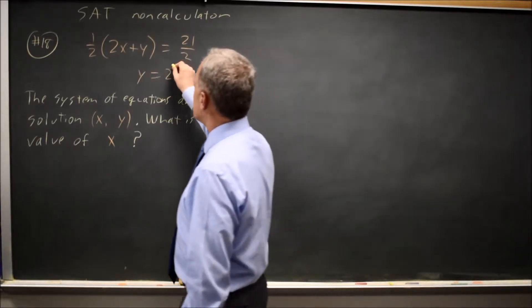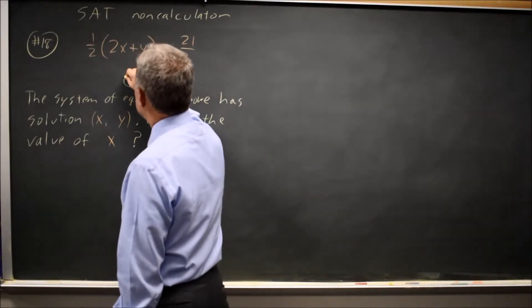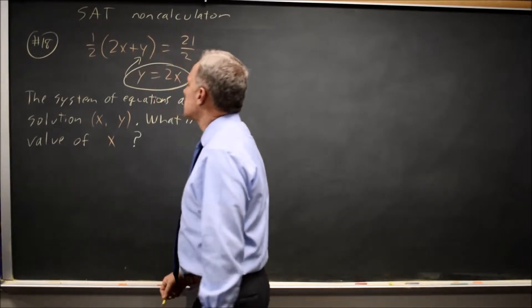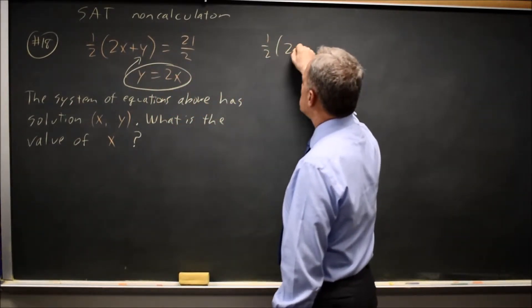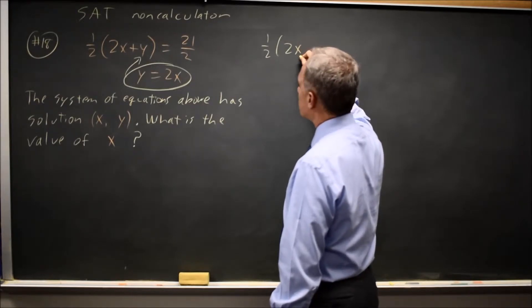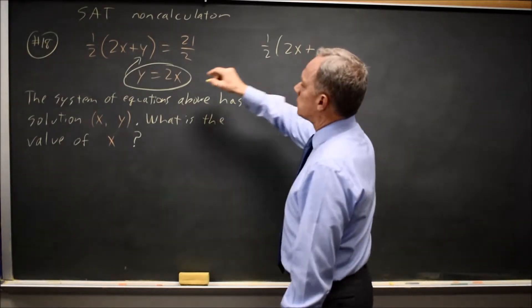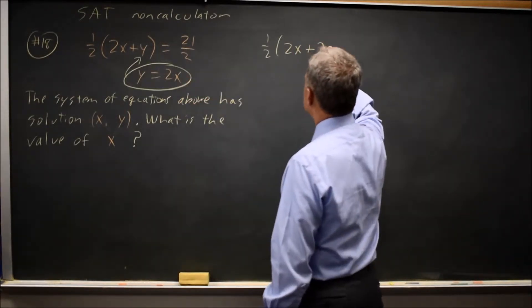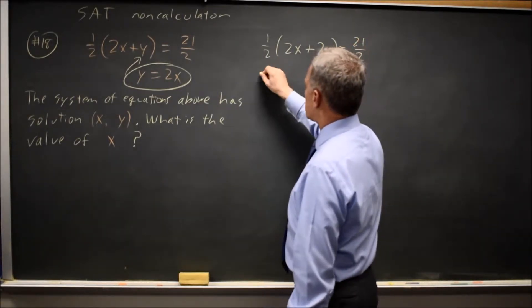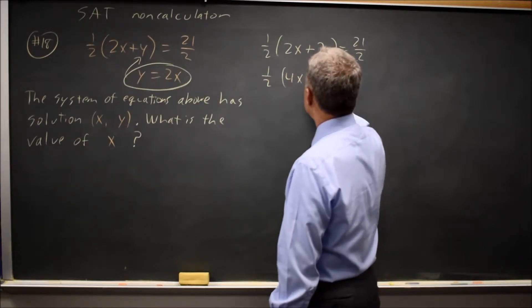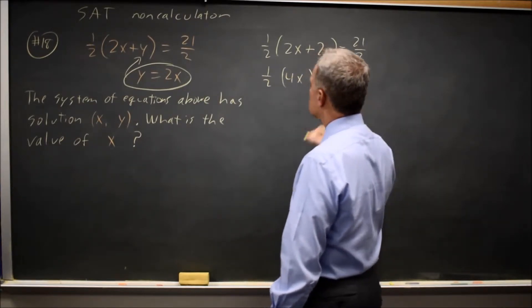The easiest way to solve this is to substitute in our expression for y in the first equation. So 1 half times 2x plus y, is 1 half times 2x plus 2x, since y equals 2x. So 2x plus 2x equals 21 over 2. That's half of 4x equals 21 over 2.